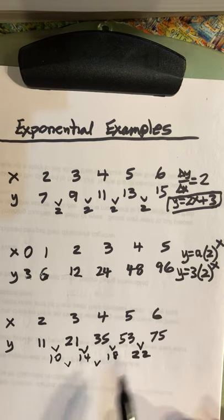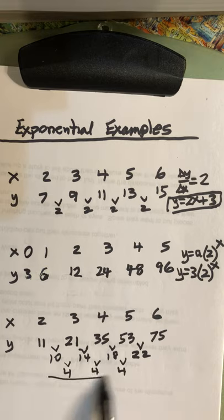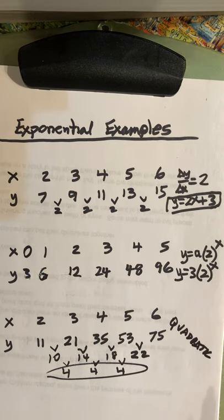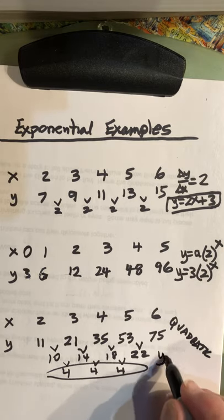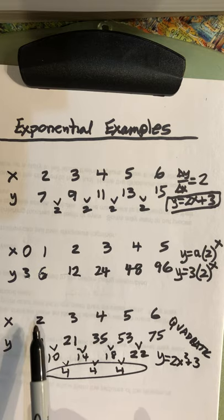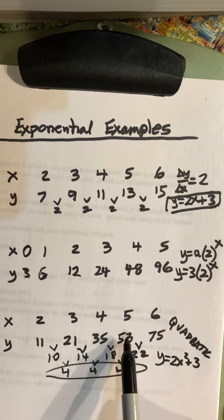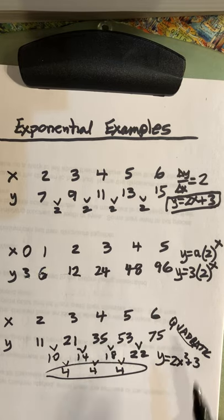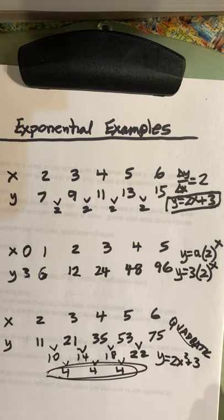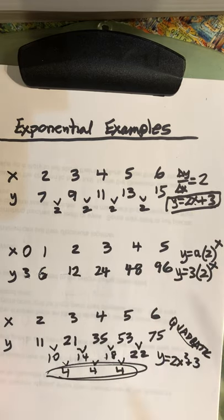But I do notice something else. If I took the second difference, look at this. There are 4. There are 4. This is actually an indication that this is a quadratic. In this case, this is actually y equals 2x squared plus 3. You could determine that by putting these data points in your calculator and doing a quadratic regression. You would know to do a quadratic regression because the second difference is constant. That's an indication of a quadratic. So here we have a linear example, an exponential example, and a quadratic example.